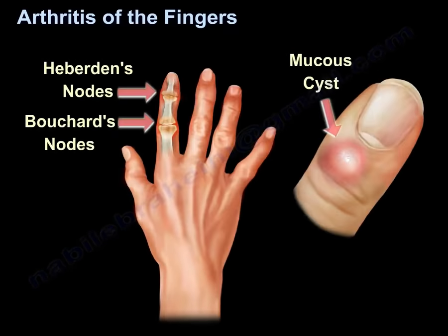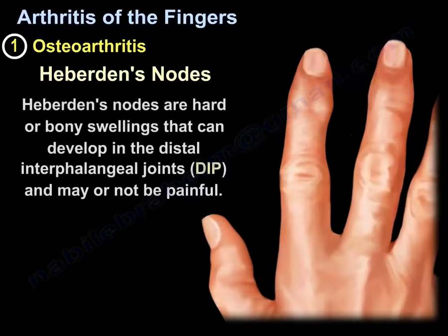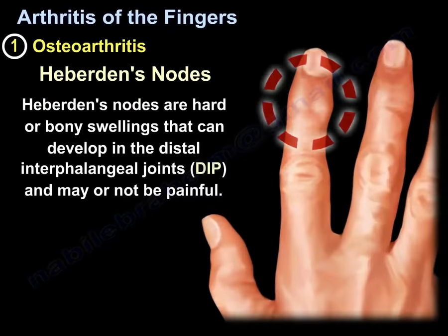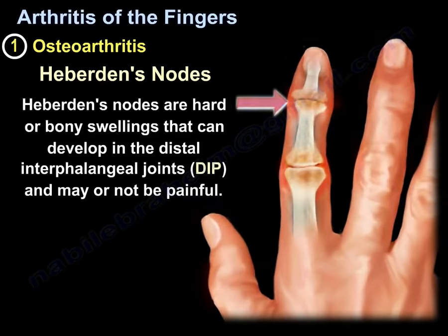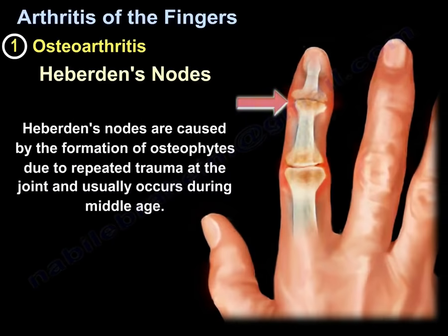Osteoarthritis of the fingers is characterized by Heberden nodes. Heberden nodes are hard or bony swellings that can develop in the distal interphalangeal joints — the DIP — and may or may not be painful. They are caused by the formation of osteophytes due to repeated trauma at the joint and usually occur during middle age.